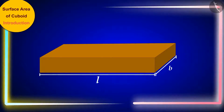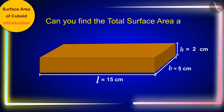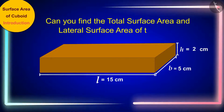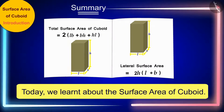The two friends together decorated the gift with beautiful colored paper and gave it to their teacher. Friends, if the length, width and height of a cuboid box are 15 cm, 5 cm and 2 cm respectively, then can you find the total surface area and lateral surface area of this box? We will see the solution to this question in the next video. Till then, try to find a solution to this question with your friends. In this video today, we learnt about the surface area of cuboid. In the next video, we will see some interesting examples based on this.